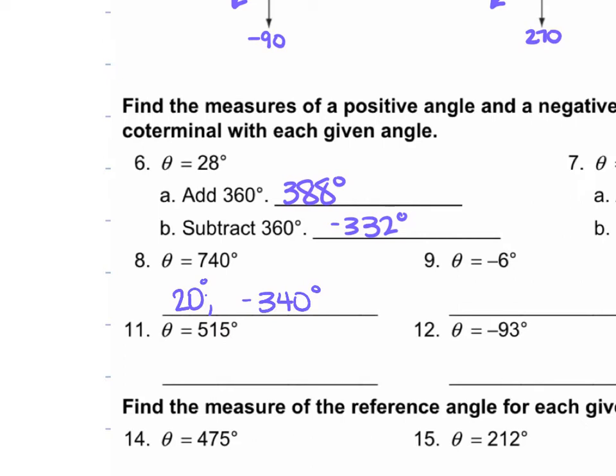For number 9, we have negative 6 degrees. So negative 6 plus 360 gives us 354 degrees.